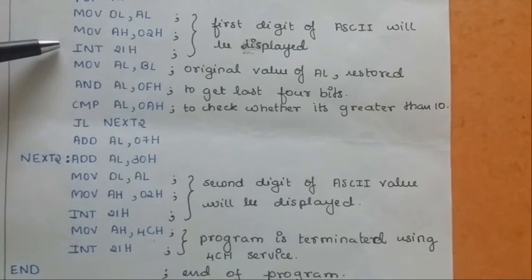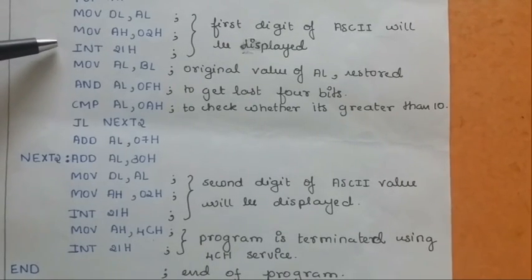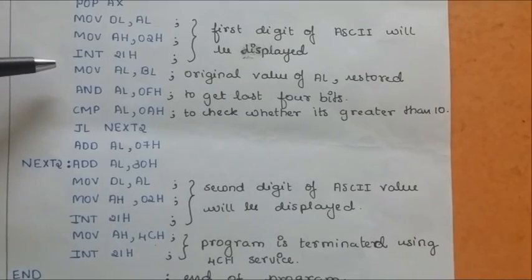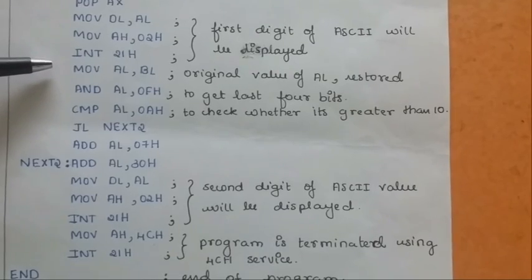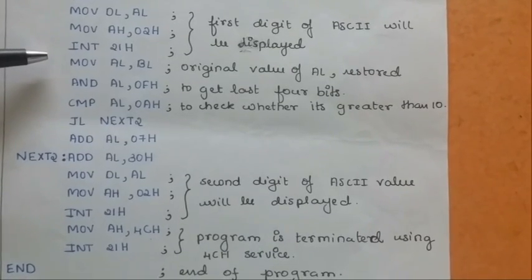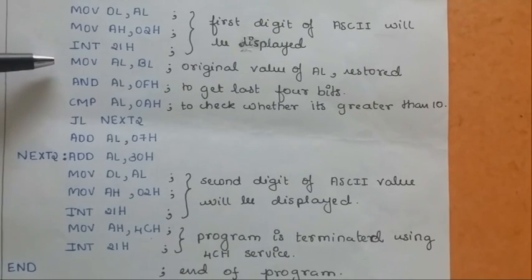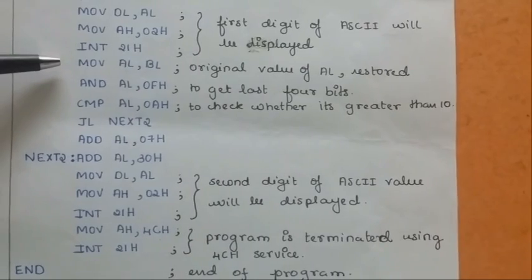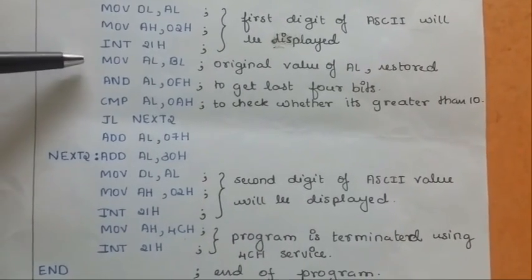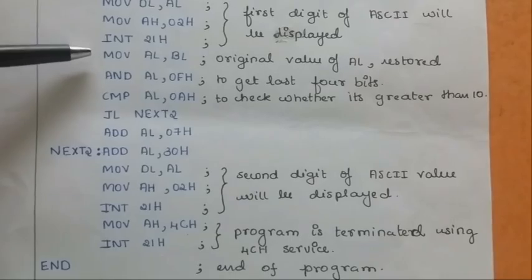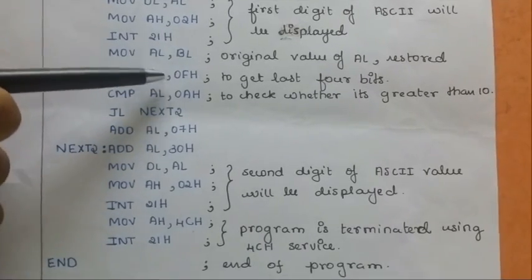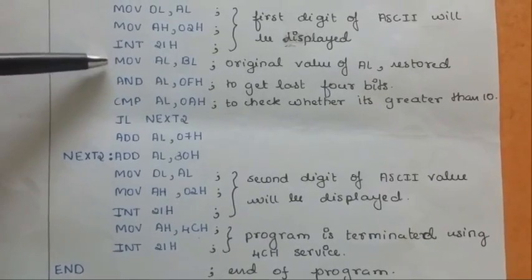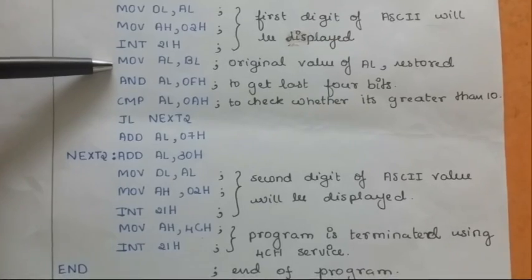Now, the left job is to display the second digit of the ASCII code. In order to get the second digit, we will have to first get the original value of al. For this purpose itself, I had stored the value of al into the bl as a backup. Now, get that value from the bl register and move it into the al. Now, al will have the original value that is in our example it is 34h.